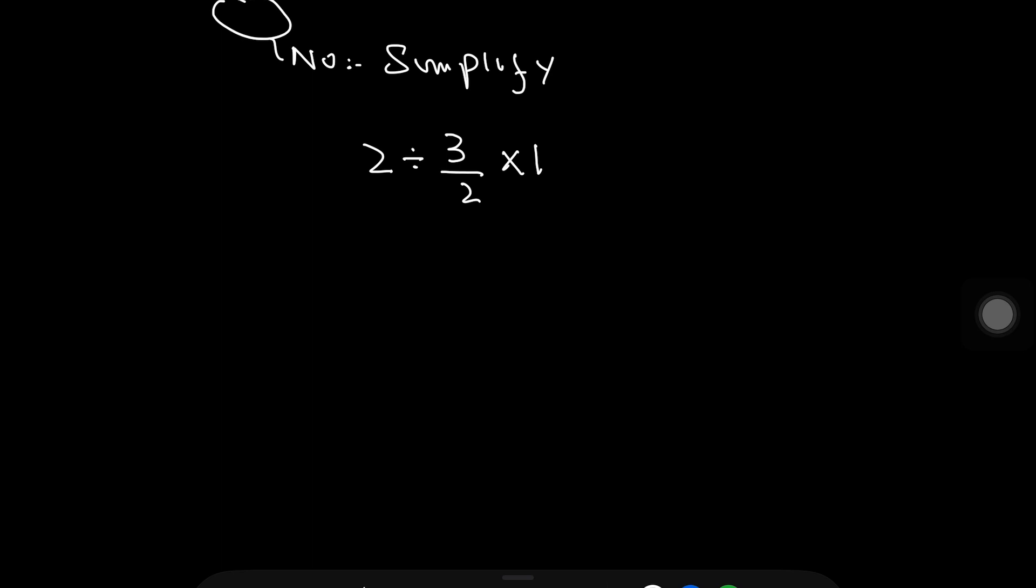Here we simplify from left to right. Division changes into multiplication. The numerator converts into denominator and denominator converts into numerator. So here, 2 upon 3, and multiply by 1.